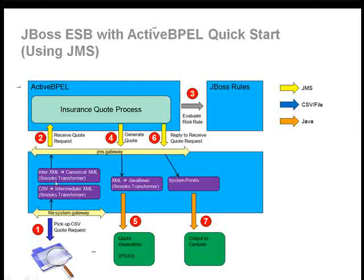Within the JBoss ESB, we use the SMOOKS transformer to facilitate that transformation. Once the CSV file has been properly transformed into XML, that XML file is dropped onto the JBoss ESB JMS gateway. Utilizing the key features of the Active Beeple 5.0 release, processes can now listen not only on web service endpoints but also on JMS-based endpoints. So once the Active Beeple engine detects a file coming in on a particular named queue, we receive that quote request into the Beeple engine. The next step is to pass it to a rules engine — in this case JBoss Rules — providing decision services to determine the risk associated with this particular person.